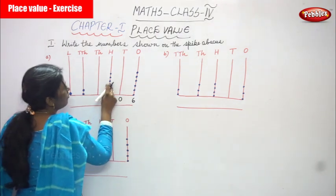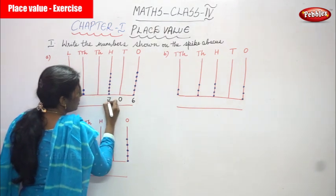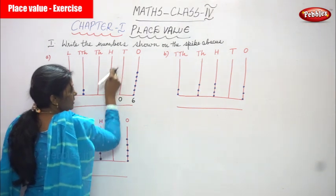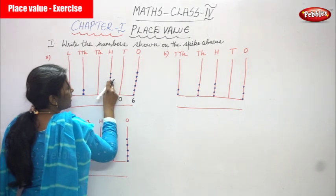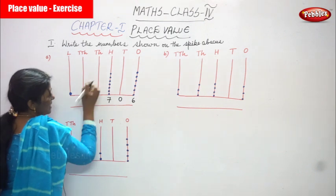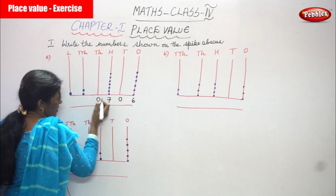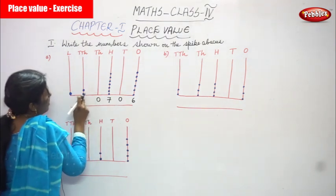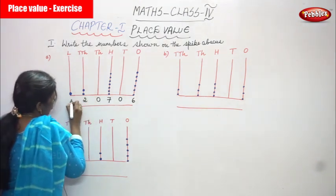Then in the hundreds place, how many dots? 1, 2, 3, 4, 5, 6, 7 dots — so you write 7. In the thousands place, there are no balls, so you put 0. In ten-thousands place, how many balls? That is 2. And in lakhs, how many? Only 1.